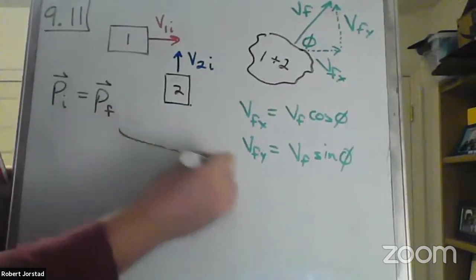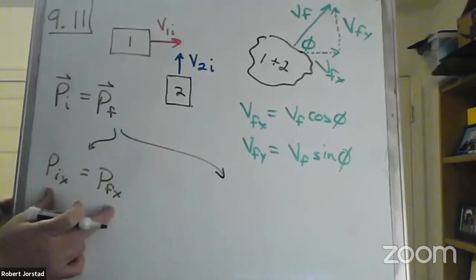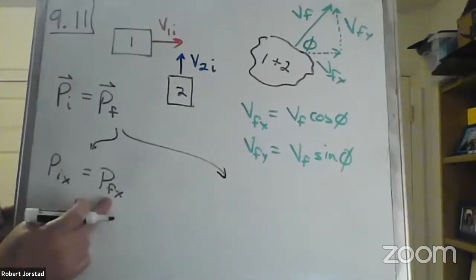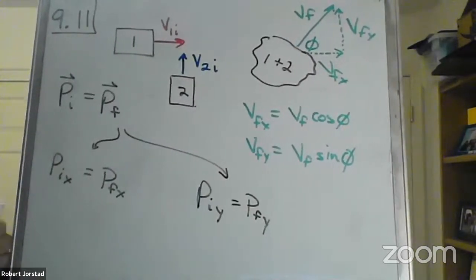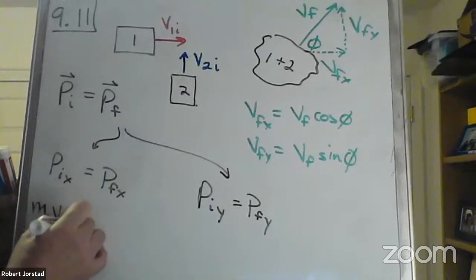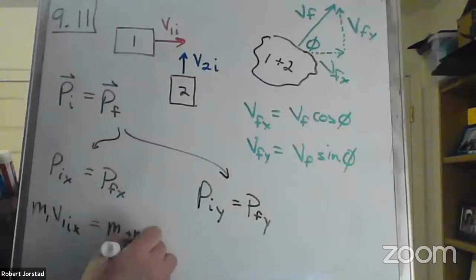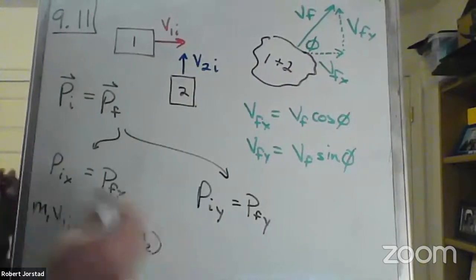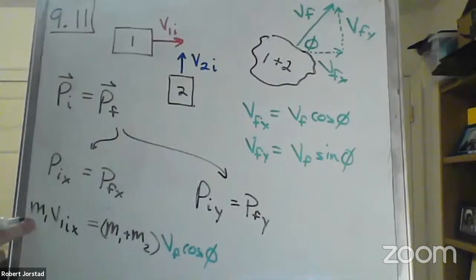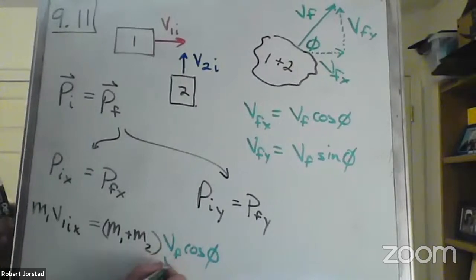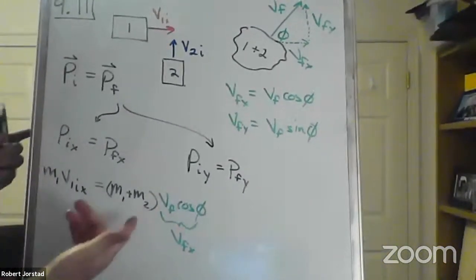This is a vector equation. I can rewrite this in two ways. P initial X equals P final X — anything to the left gets a minus sign, anything to the right is plus. And P initial Y equals P final Y. So I could write M1 V1 initial X — 2 doesn't have any in the X direction — equals (mass one plus mass two) times V final cosine phi. I know all these numbers, and in theory I could get V final X as well.